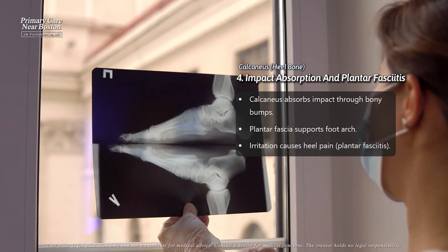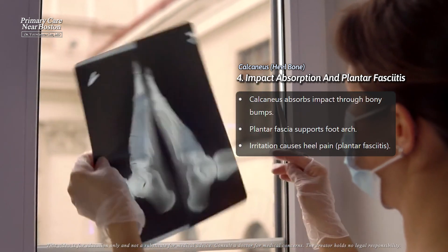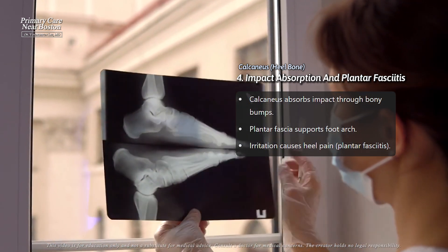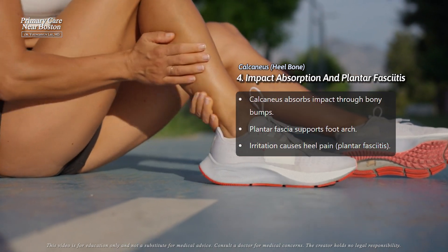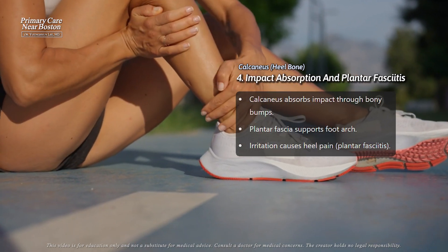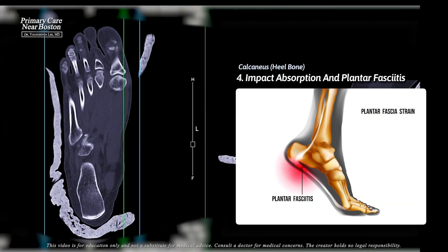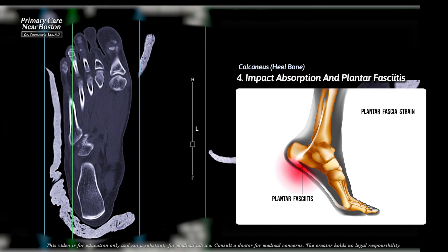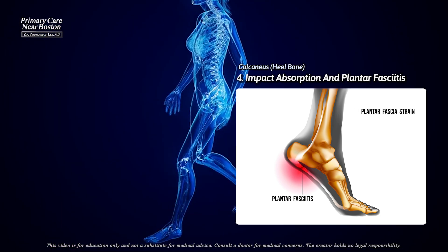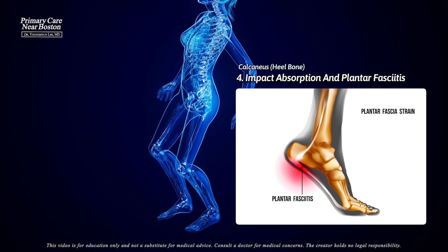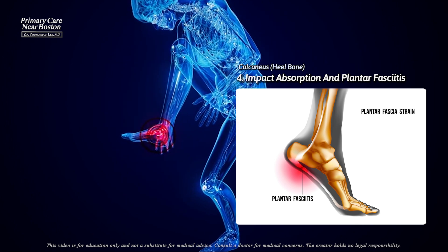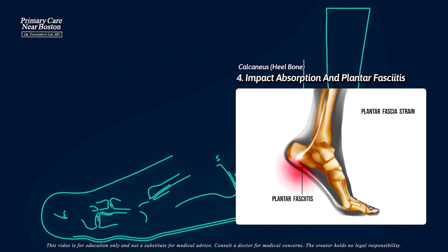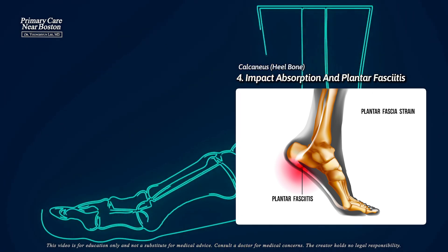Underneath the calcaneus, there are two bony bumps that help absorb the impact of walking. These areas can sometimes get bruised or even slightly fractured if you injure your foot. This is also where the plantar fascia attaches — a thick band of tissue that supports the arch of the foot. If this area gets irritated, it can lead to a common condition called plantar fasciitis, which causes pain in the heel, often due to bone spurs.